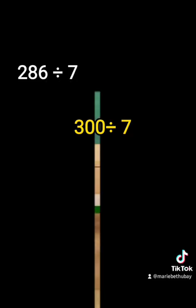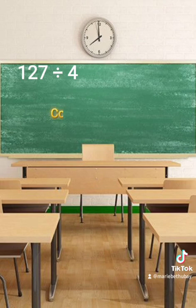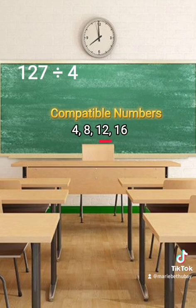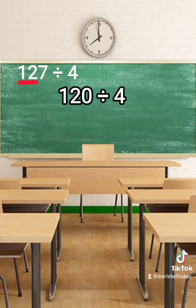So let's have another example. Estimate 127 divided by 4. Let's use compatible numbers. Since we are going to divide by 4, the compatible numbers are 4, 8, 12, 16, and so on. The closest compatible number is 12. We leave the 12 and the rest becomes 0, so it becomes 120 divided by 4. So, 120 divided by 4 is equal to 30.